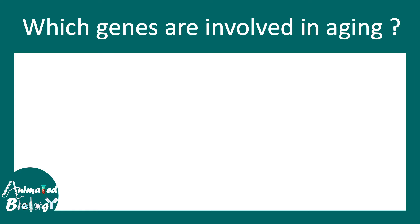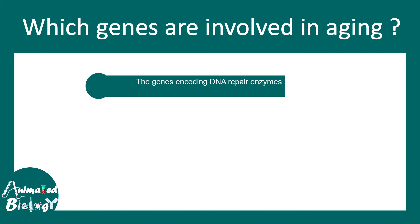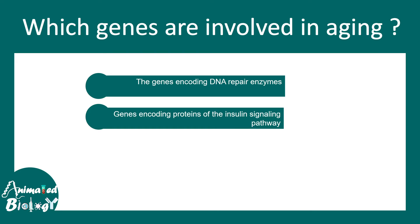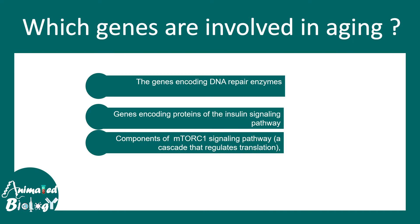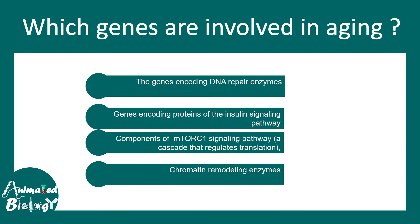Now let's talk about which genes are actually involved in the process of aging. The category of genes involved encodes for DNA repair enzymes, proteins in the insulin signaling pathway, components of the mTOR signaling pathway which regulates translation, anabolism, and many other metabolic processes, and also genes associated with chromatin remodeling enzymes. All of these categories of genes are associated with aging.